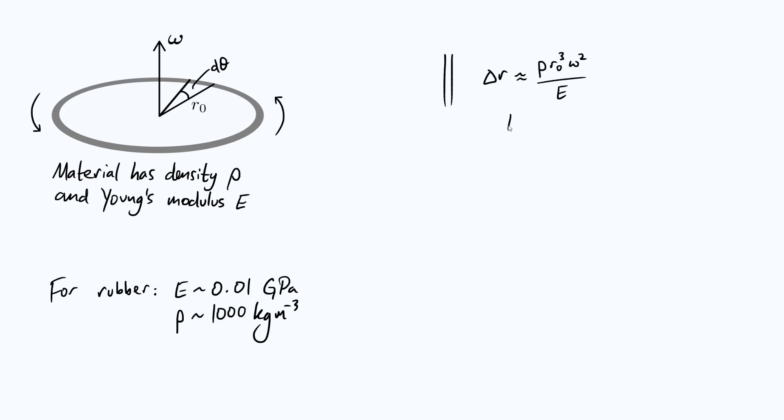And so what I want to do is just take our equation here, rearrange it for omega. So if we change the subject and make omega the subject we're going to get omega is the square root of E times delta R divided by rho times R naught cubed.